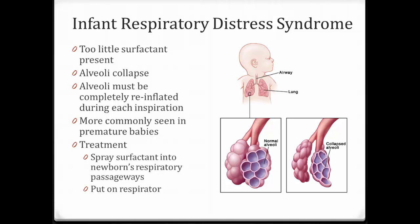To treat this, a couple of things can be done. If a premature baby doesn't have enough surfactant, they will spray surfactant into the newborn's respiratory passageways. This strategy was actually first discovered and used by doctors in the Buffalo area.